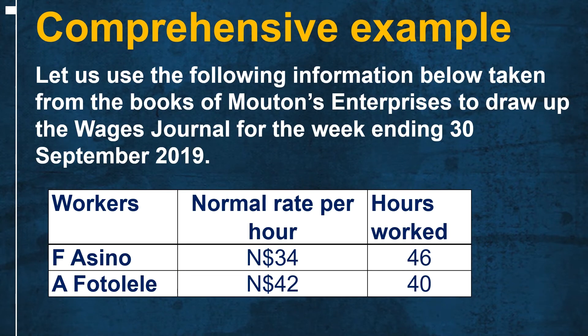Let us use the following information taken from the books of Maton Enterprise to draw up the wages journal for the week ending 30 September 2019. We have two workers: F. Asino and A. Fotolele. The normal time rate per hour for F. Asino is N$34, while for A. Fotolele it is N$42. The hours worked for F. Asino is 46 hours, while for A. Fotolele it is 40 hours.